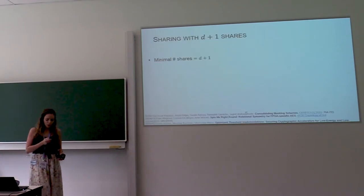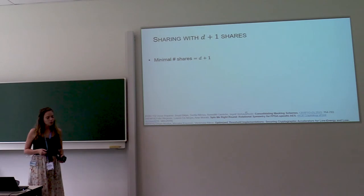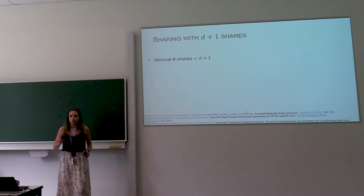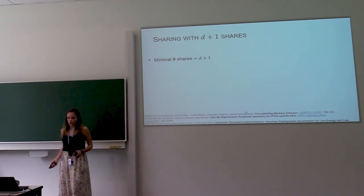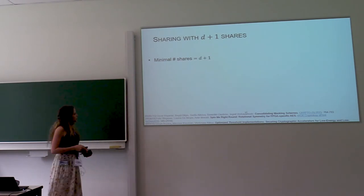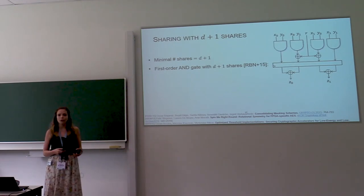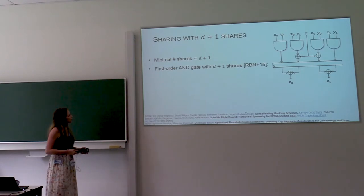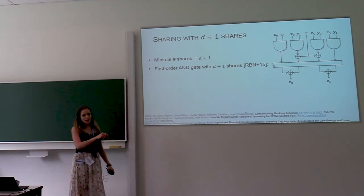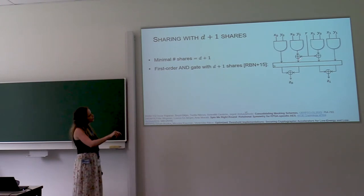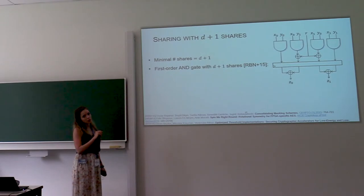So you heard earlier with Joseph that the minimum number of shares is D plus one. And so for first order security, we were just using three shares instead of two shares. So it was only in 2015 that it was realized that you could do hardware masking with the minimum number of shares. So two shares. And this is a masked AND gate. So we have four cross-products again. We re-mask some of them and we synchronize them using a register and we compress them back into two shares.